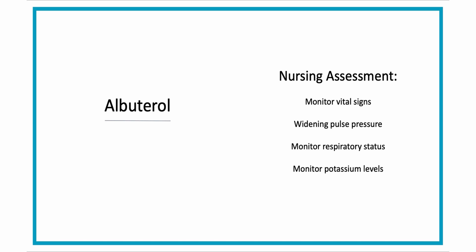For your nursing assessment with albuterol, you're going to want to monitor vital signs, especially heart rate, respiratory rate, and blood pressure. Watch for any widening pulse pressure — that's when the diastolic and systolic are very far apart. For example, if your diastolic is 60 and your systolic is 130, that's too far apart, so watch for that.